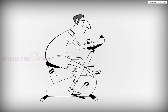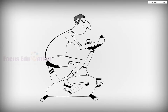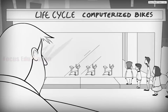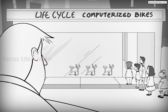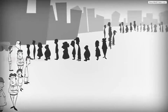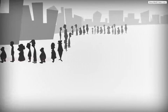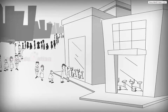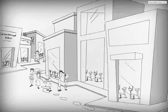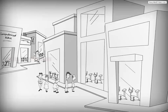When Life Fitness began, it only had one product: the Lifecycle Computerized Bike. Since it was the first of its kind, it had no immediate competition. However, as the success of the company increased, other companies started to produce their own brands of fitness equipment.